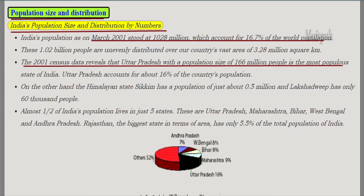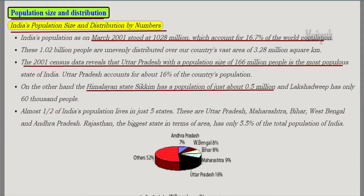According to the 2001 census, Uttar Pradesh with a population of 166 million is the most populous state of India, accounting for 16 percent of the country's population. The Himalayan state Sikkim has a population of only 0.5 million, and Lakshadweep has only 60,000 people. Half of the Indian population lives in just five states: Uttar Pradesh, Maharashtra, Bihar, West Bengal, Andhra Pradesh, and Rajasthan.